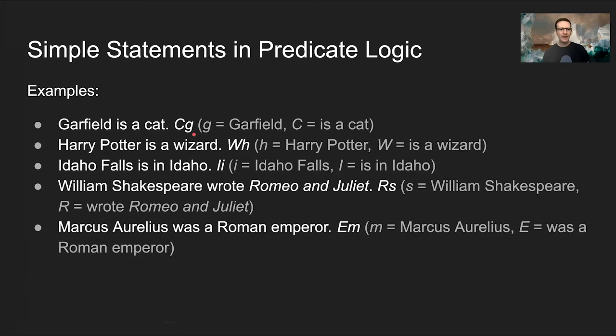Here's another example: 'Harry Potter is a wizard.' Let lowercase h stand for Harry Potter, and let uppercase W stand for the predicate 'is a wizard.' The predicate comes first: capital W followed by lowercase h. So 'Wh' means the predicate 'is a wizard' applies to the entity h, Harry Potter — in other words, Harry Potter is a wizard.